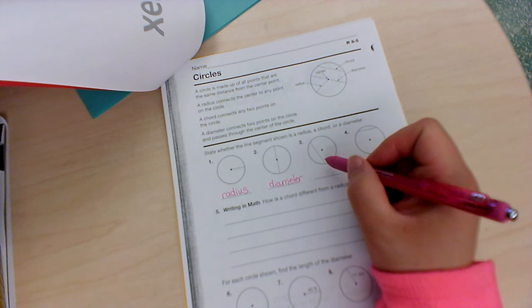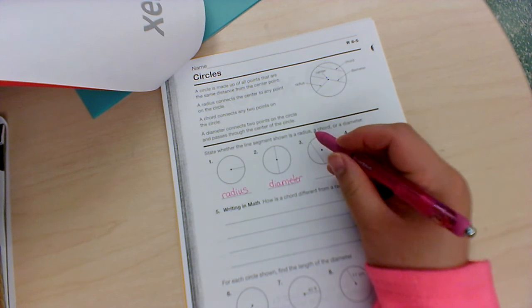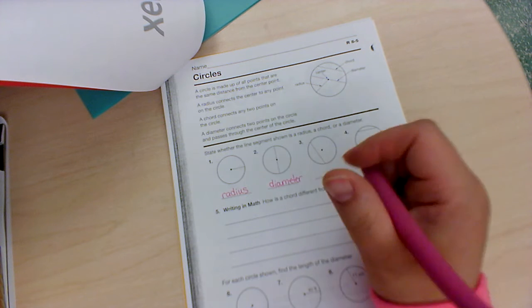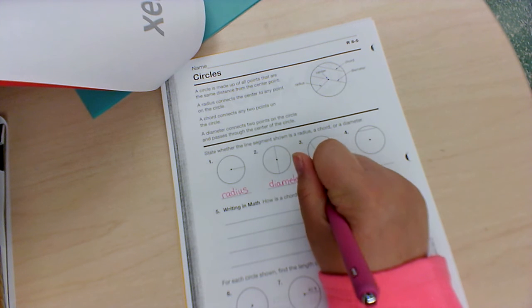Number three, this does not go through the center but it goes all the way across, so this would be a chord.